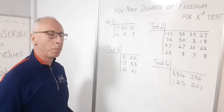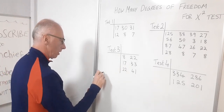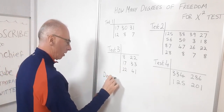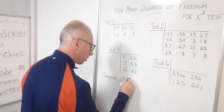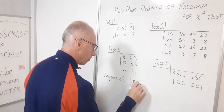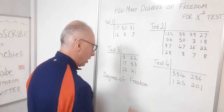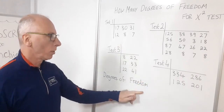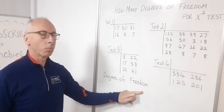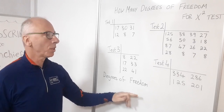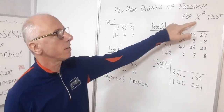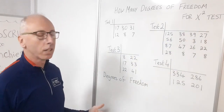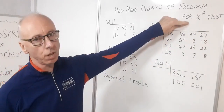The degrees of freedom are critical in trying to calculate what's called the critical value when you compare it to the test statistic value. That's going to tell us if there's any correlation between the columns and the rows or not.